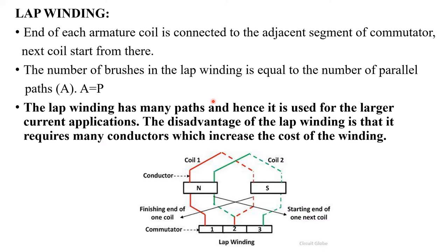Let us discuss about lap windings. In lap windings, the end of each coil will connect to the adjacent segment of the commutator, and the next coil will start from that commutator segment. Here you can see a red colored coil — it will start from commutator segment 1 and end at 2, and from that 2 the next coil starts.